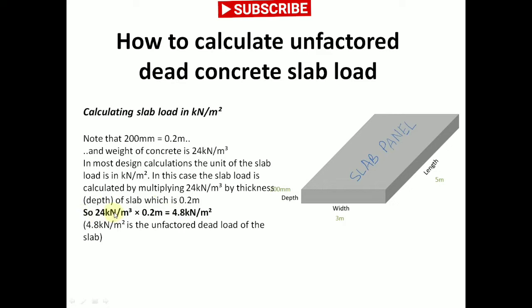So 24 kN per meter cubic times 0.2 meters gives us 4.8 kN per meter squared.